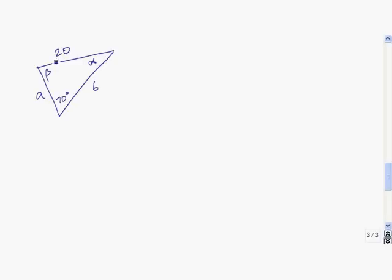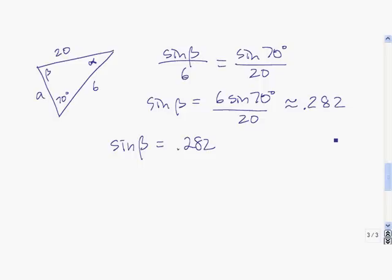Since alpha and A are both unknowns, I'm going to start with beta again. So I have sine of beta over 6 equals sine of 70 degrees over 20. Then we solve for sine of beta by multiplying both sides by 6. We find that sine of beta is about 0.282.